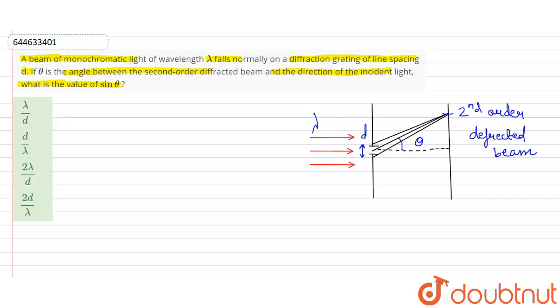So students, we know one relation in the case of diffraction grating, that is d sin theta is equal to n times lambda, where n is the order of the diffracted beam.